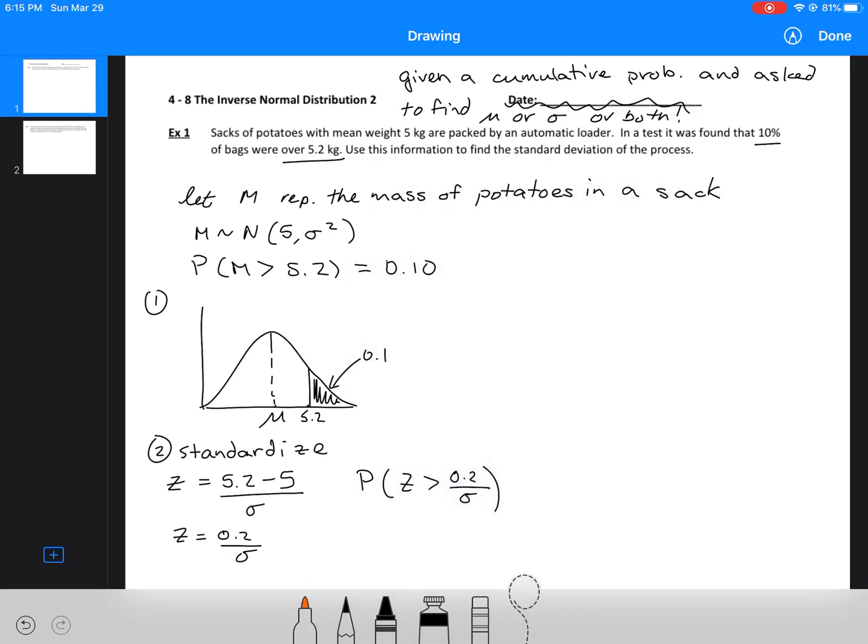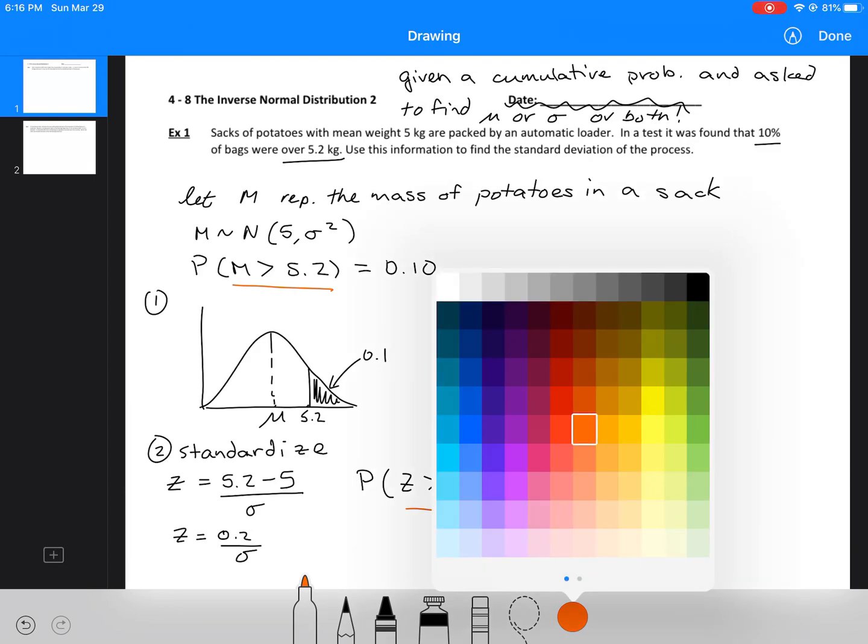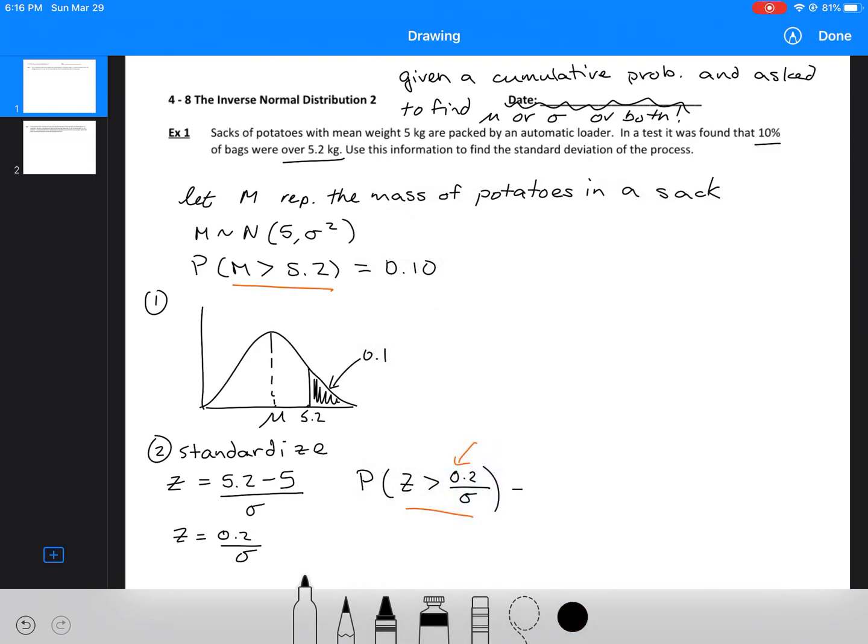Here I can rewrite my probability statement as P(Z > 0.2/σ). So this is the part that I'm changing. M is greater than 5.2, I'm replacing it with z, which replaces the second part of my probability statement. The answer is still the same, 0.1.